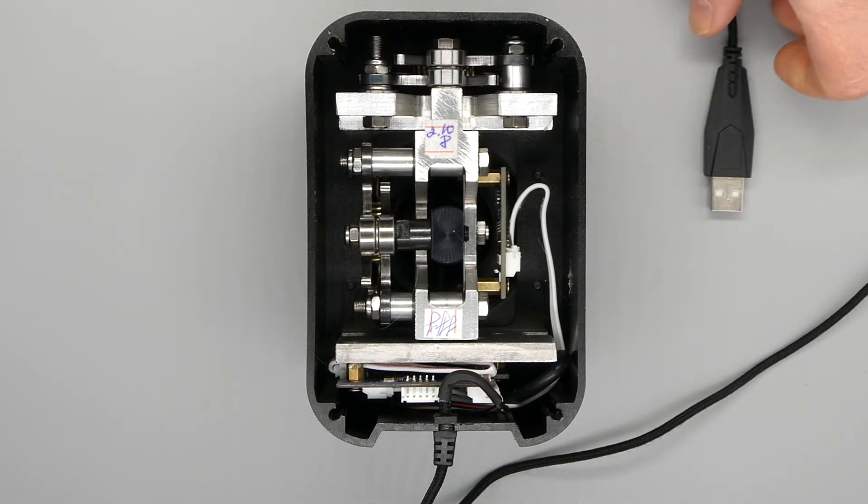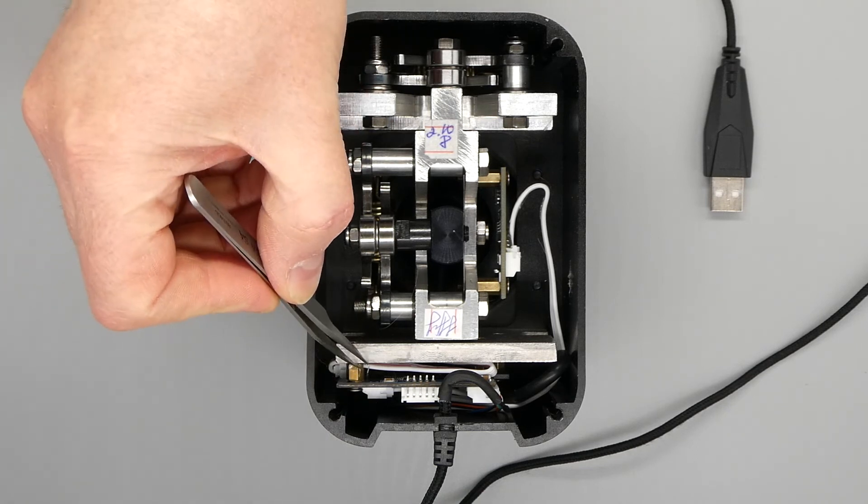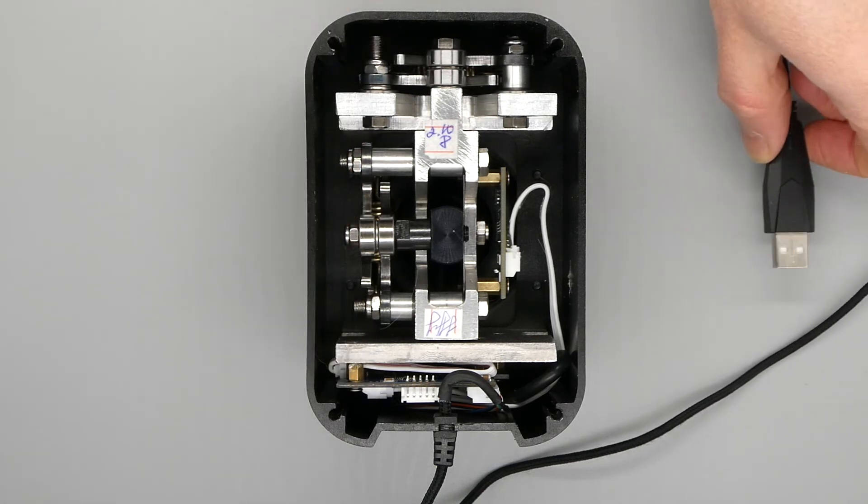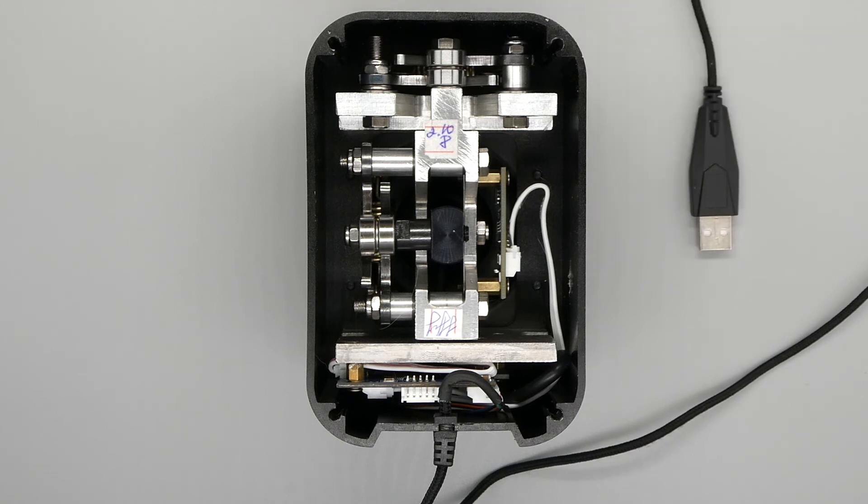And then once you short that out, as in make contact between those two points and then plug the USB in, it switches the thing into bootloader download mode and then what you can do is you can then load up the VPC software, re-flash the firmware on the device and then create a new profile and you're good to go. The thing's back up and running.